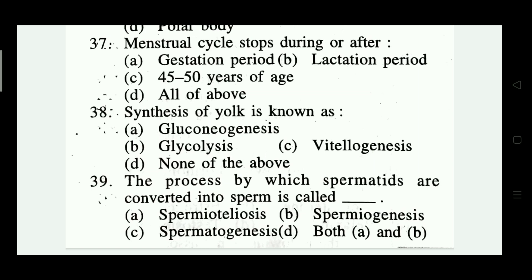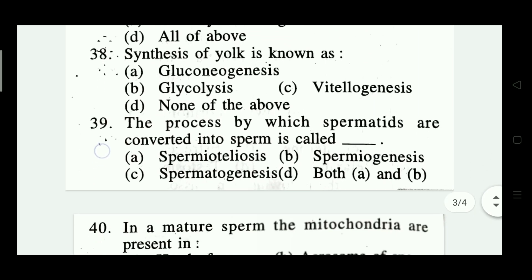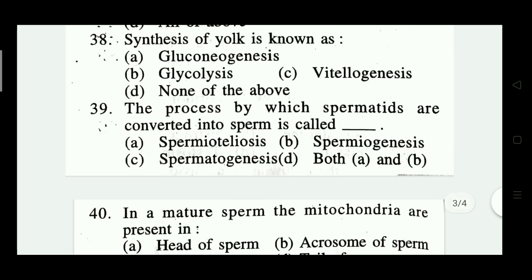Question number thirty-eight: synthesis of yolk is known as — gluconeogenesis, glycolysis, vitelogenesis, none of these. The right answer is vitelogenesis — option C.